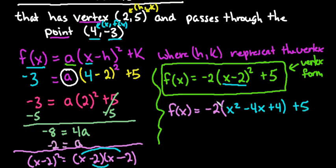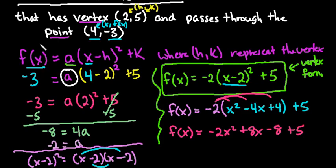Now what we need to do is we need to simplify by distributing the -2 into everything in the parentheses, not to the 5 on the outside. So we would have f(x) = -2x². -2 times -4 would give me positive 8x. -2 times 4 would give me -8 plus 5.